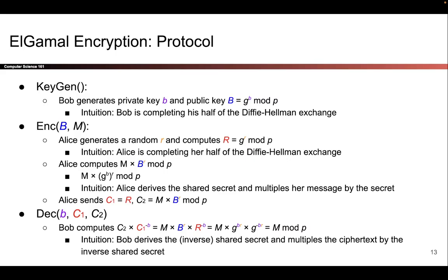At this point, Alice is able to derive the Diffie-Hellman shared secret because she knows big B — that's the disguised secret that was sent by Bob — and she knows little r, which is her half of the secret. So if she computes big B to the power of little r, that should give us the shared secret that we were looking for, which was g to the b r. Now that Alice has the shared secret, she can use it to scramble up the message that she wants to send, and we'll do that with a multiplication. So if Alice wants to send a message m, then she will take the message m, multiply it by the shared secret g to the b r, mod p, and that is the ciphertext.